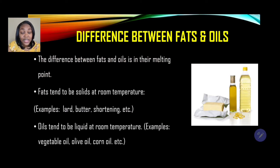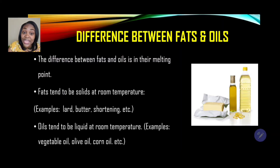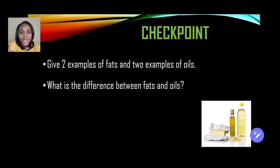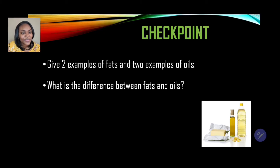The difference between fats and oils is their melting point. Fat tends to be solid at room temperature — examples include lard, butter, and shortening. Oils tend to be liquid at room temperature — examples include vegetable oil, olive oil, and corn oil. In order for fat to melt, we have to apply heat. We may also include margarine as an example of fat.